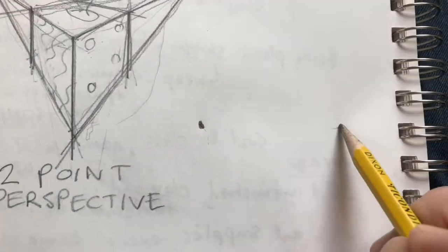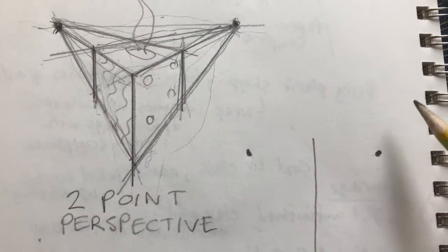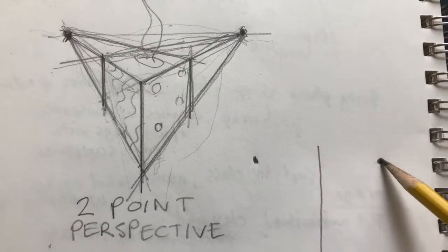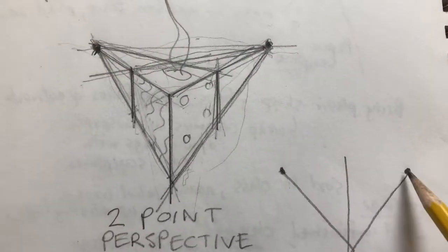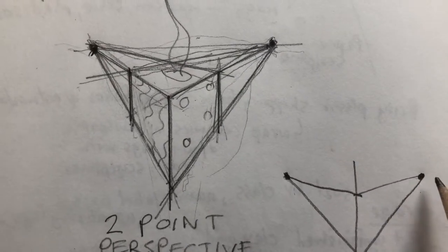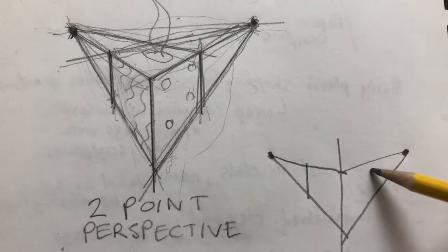So make your two points and draw your middle line to help you, and draw those lines, and those lines, and then do your sides.